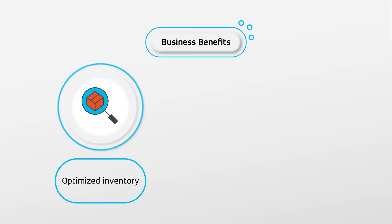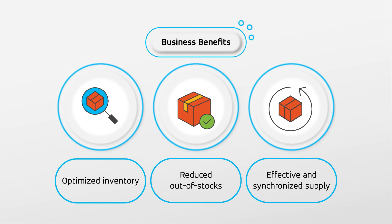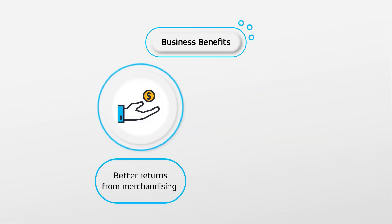Let's look at some of them. Planogram Generator enables inventory to be optimized to store and online order demand, creates product facings that meet local demand resulting in reduced out-of-stocks, and creates store-level planograms for an effective and synchronized supply chain. It thus helps to realize better returns from more effective and targeted merchandising.